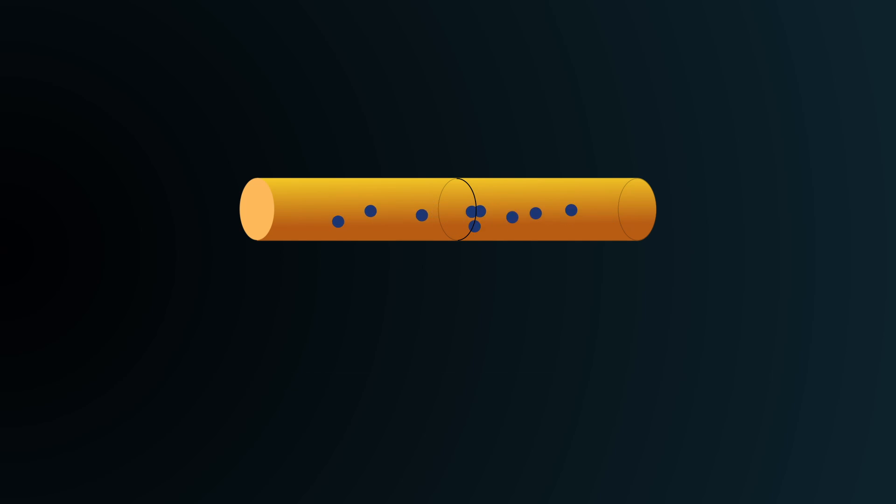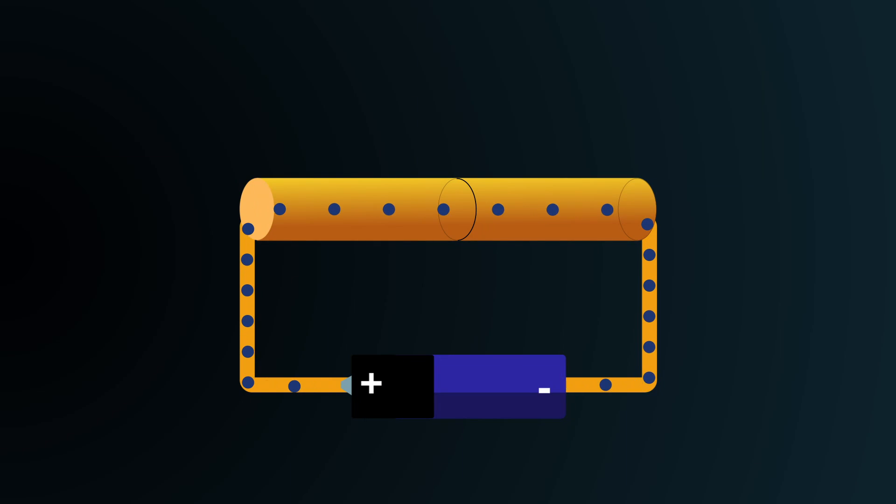One way to do this is to connect a battery to the wire. But how does this work? Why do charges start to flow when the battery is connected?